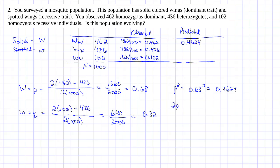Our heterozygote predicted genotype frequency is 2 times p times q. So 2 times 0.68 times 0.32. 0.4352.